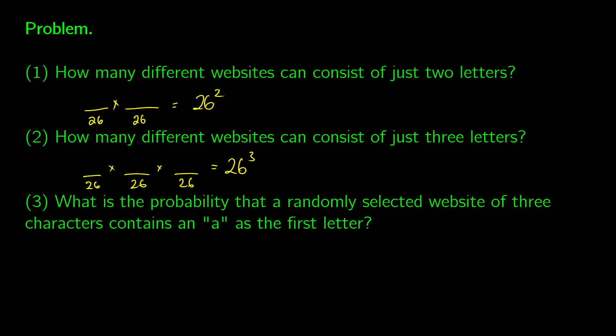Now, what is the probability, so we can think about probabilities now, that a randomly selected website of three letters contains an A as the first letter? So what we have to think about here is the probability, so A blank blank. So this is our event here. We get A blank blank. And out of all the possible ones that we have, we could get blank, blank, blank.